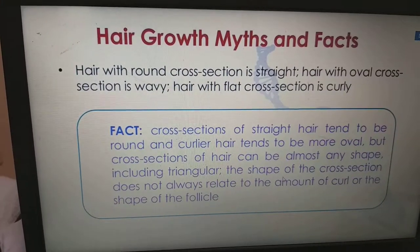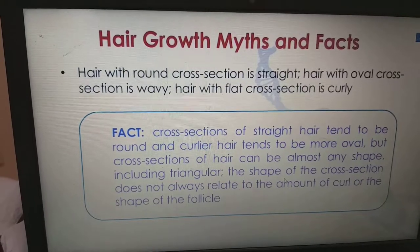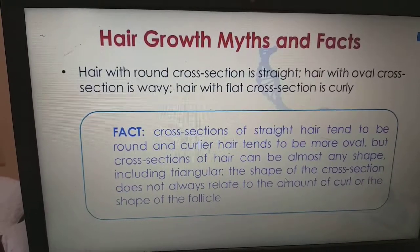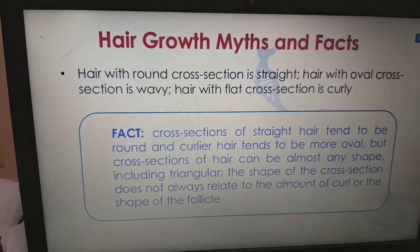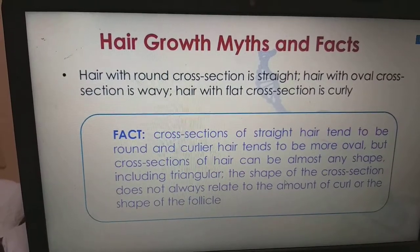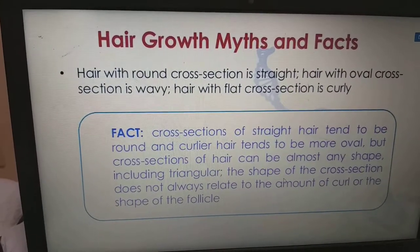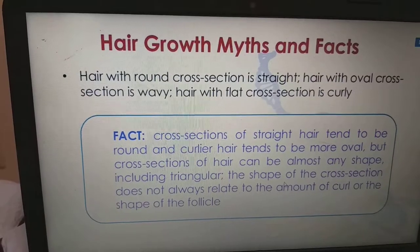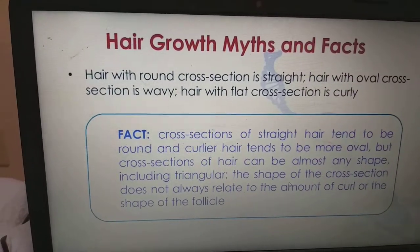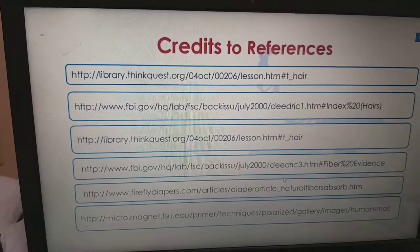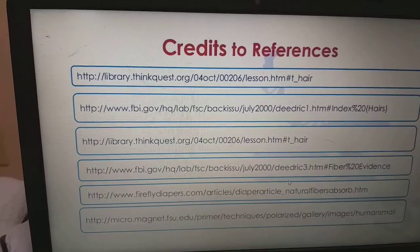Hair with a round cross-section is straight; hair with an oval cross-section is wavy; hair with a flat cross-section is curly. The fact is: cross-sections of straight hair tend to be round, and curlier hair tends to be more oval — but cross-sections of hair can be almost any shape, including triangular. The shape of the cross-section does not always relate to the amount of curl or the shape of the follicle. Thank you very much — please do like, share, comment and subscribe to my channel.